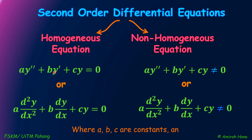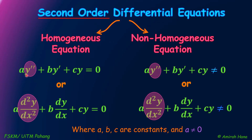A, B, and C here are constants. The coefficient A of the second derivative must not equal to 0, because this is second order. Second order means the equation must have a term containing Y double prime or D²Y/DX².